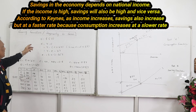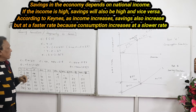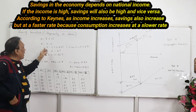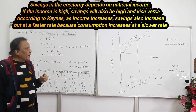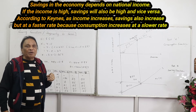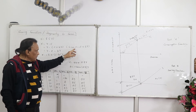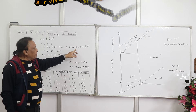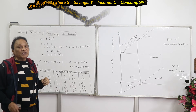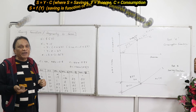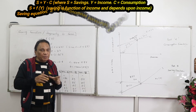We already know S = Y − C. Our savings depend upon income minus consumption. From the consumption function we've already seen: C = C̄ + bY. At any given level of income, our consumption equals C̄ plus bY. Here C stands for consumption, C̄ is autonomous consumption — that is, consumption at zero level of income — and b is MPC, marginal propensity to consume.